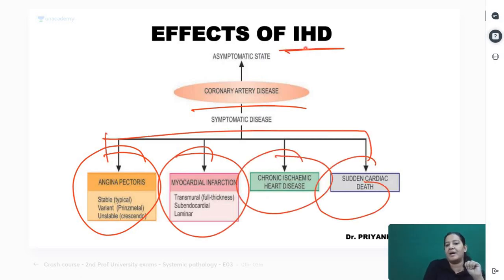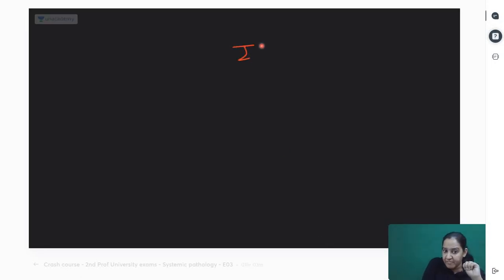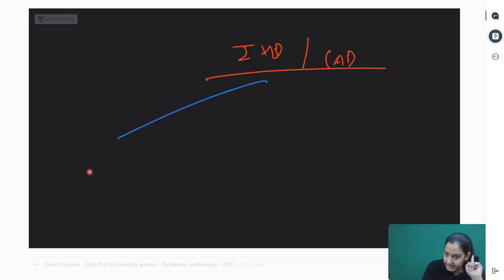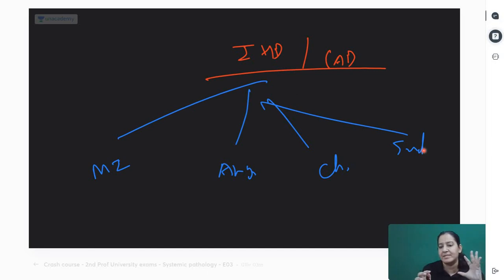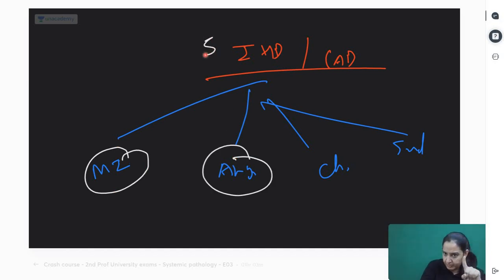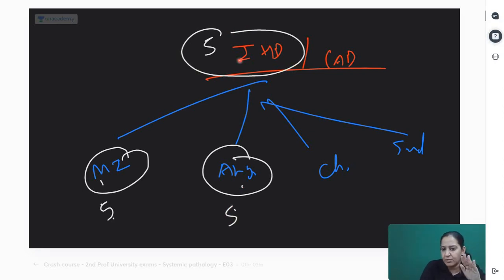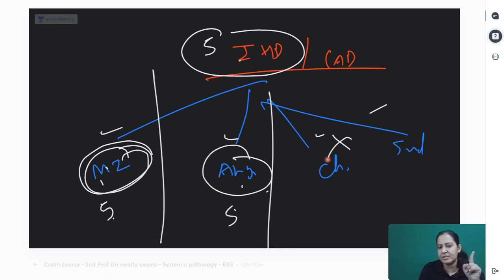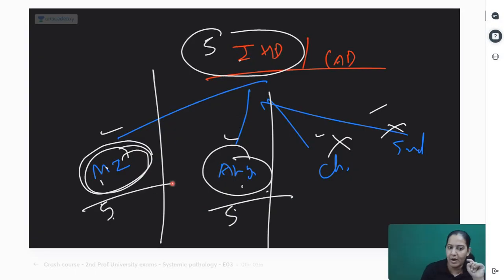These four conditions together are known as ischemic heart disease or coronary artery disease. If an exam question is on ischemic heart disease, the examiner is asking you to write all four: MI, angina, chronic heart disease, and sudden cardiac death. It is an umbrella term. However, I am teaching you angina and MI specifically. A five-mark question can come on each individually. If it says MI, write MI; if it says angina, write angina.